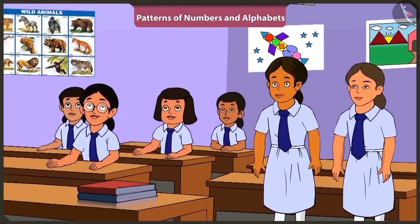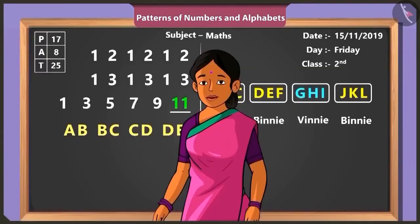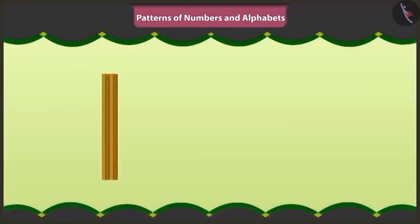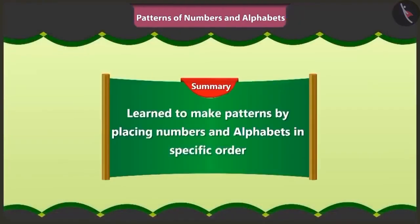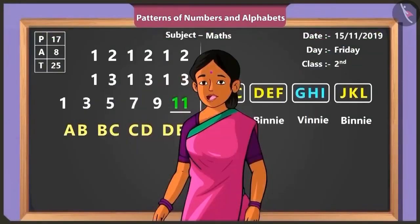Children, remember that a pattern is made by repeatedly writing numbers or alphabets in a specific order. Friends, today you learned to make patterns by placing numbers and alphabets in specific order. In the next video, we will learn more about patterns made of numbers and alphabets with the help of some interesting examples.